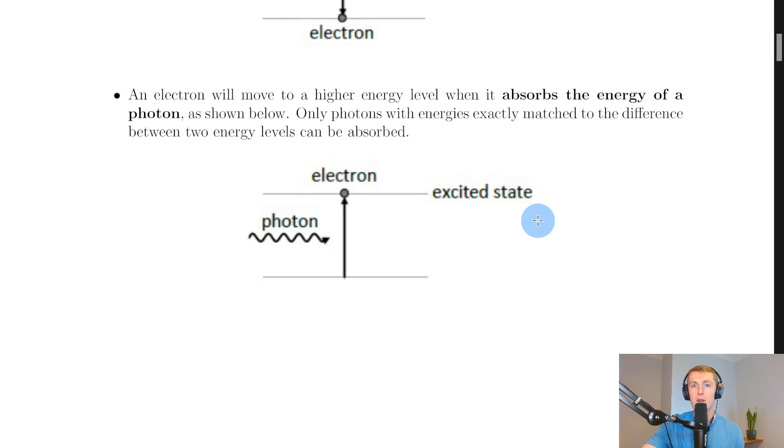We can also see the case for absorbing photons. An electron will move to a higher energy level when it absorbs the energy of a photon as shown below. If you've got an electron in a lower energy level you can cause it to be excited or raised to a higher energy level by absorbing a photon. If your atom absorbs a photon then the energy from the photon can be given to an electron and cause it to be excited. Only photons with energies exactly matched to the difference between two energy levels can be absorbed.